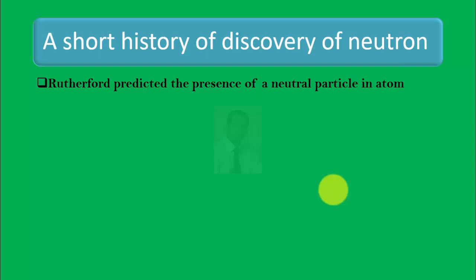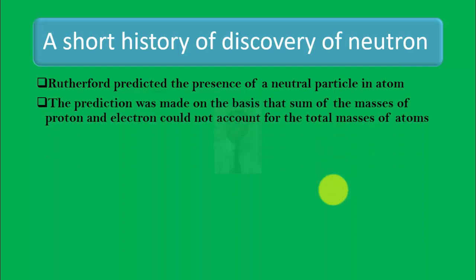A short history of discovery of neutron: It was Rutherford who predicted the presence of a neutral particle in atom. The prediction was made on the basis that sum of the masses of proton and electron could not account for the total mass of the atoms.